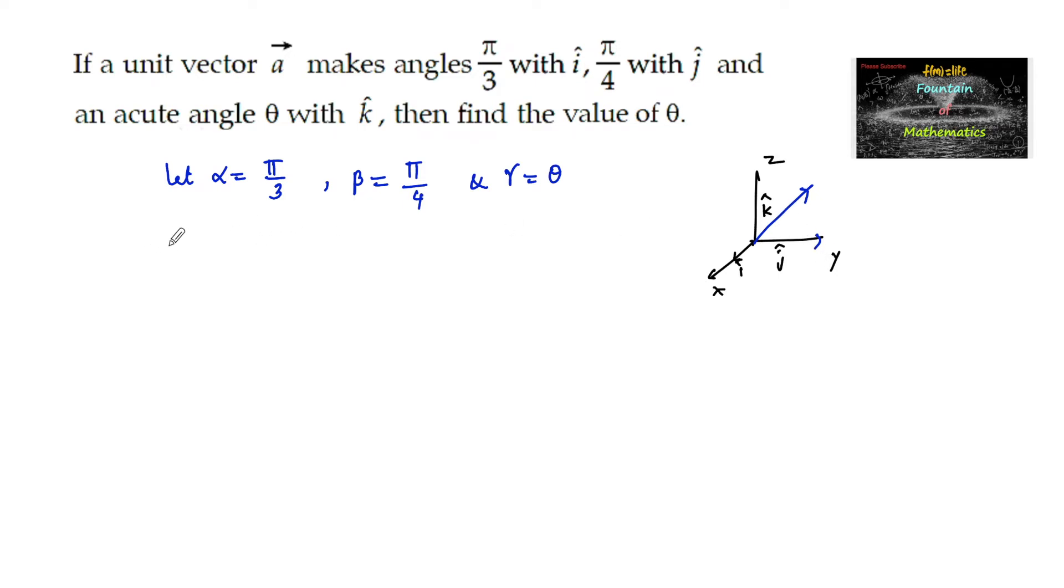And we know that cos α, cos β, cos γ are the direction cosines of vector A. So, L = cos α = cos(π/3) = 1/2. And M = cos β = cos(π/4) = 1/√2, and N = cos θ.